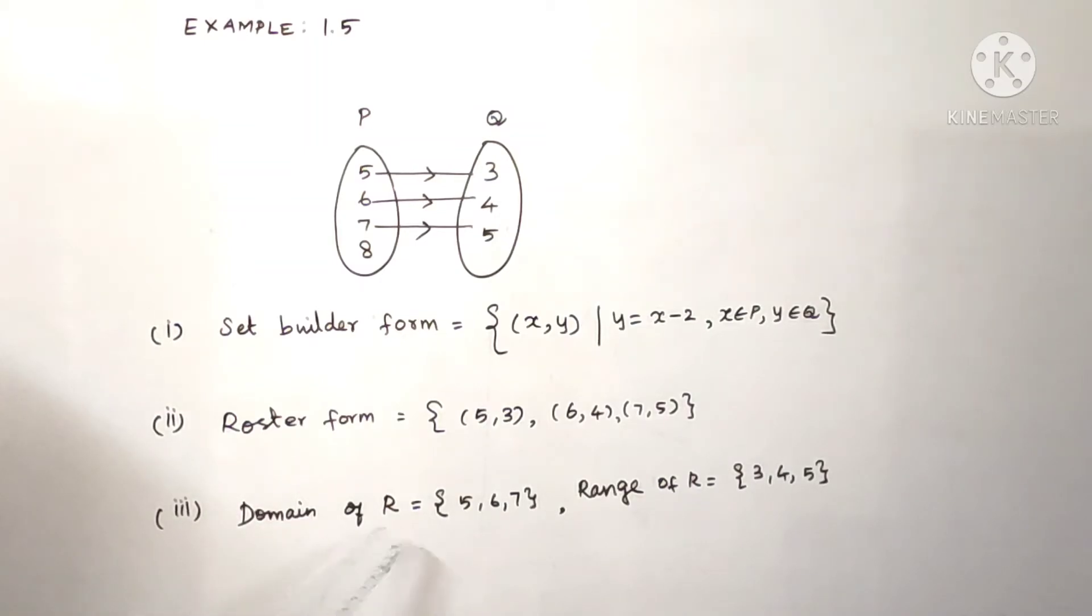Next, domain of R. The domain is the x value. In the ordered pairs, the x value is the domain. So 5, 6, 7.